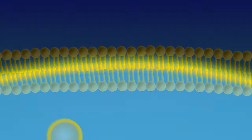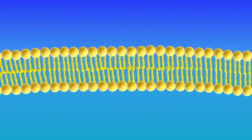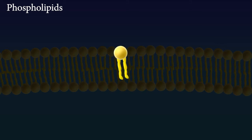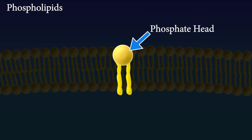If we zoom in on the membrane, we can see that it is made of several molecular parts. Most of the membrane is made of molecules called phospholipids. Phospholipids have a head made of phosphate and two tails made of fatty acids.